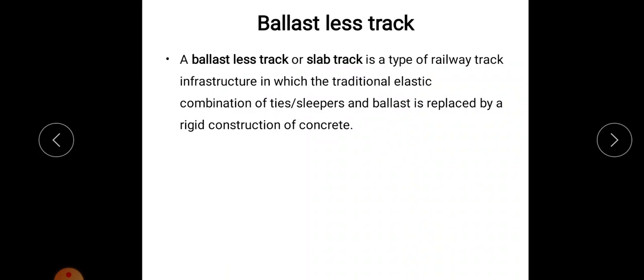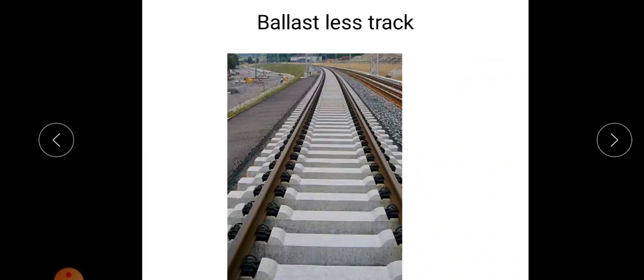That combination of sleeper and ballast is not there. It is replaced by the rigid construction of concrete. That is known as ballastless track. So it is a new technology. We are replacing the combination of sleepers and ballast by a rigid construction of concrete. This is known as ballastless track.